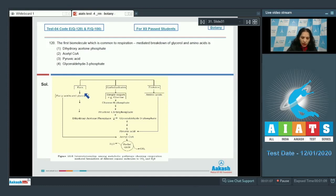This glycerol is converted into DHAP and these amino acids form the pyruvic acid. So glycerol through DHAP forms pyruvic acid and amino acids also form pyruvic acid. So pyruvic acid is the common biomolecule between glycerol and amino acids. The correct option is option number 3.